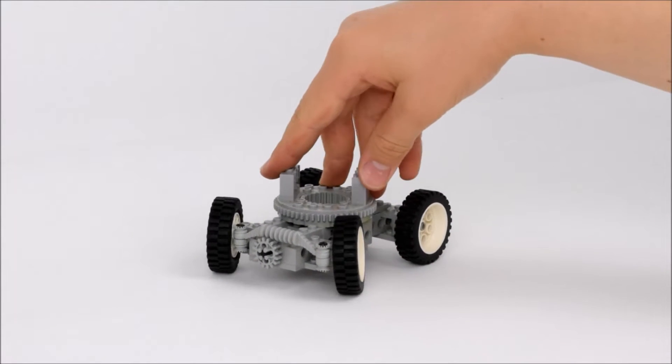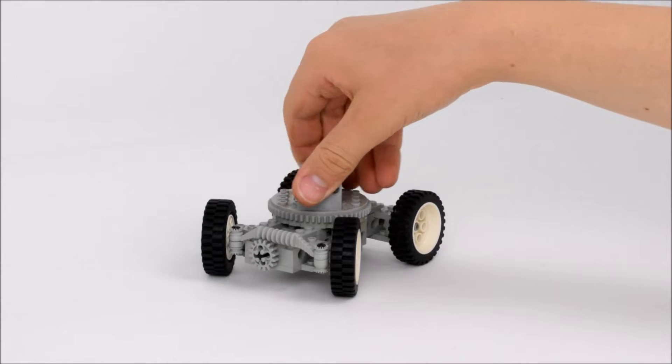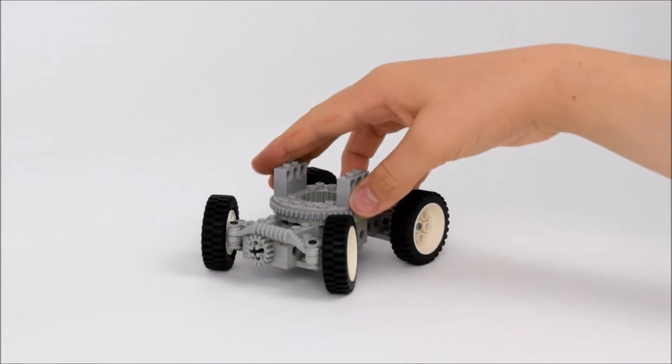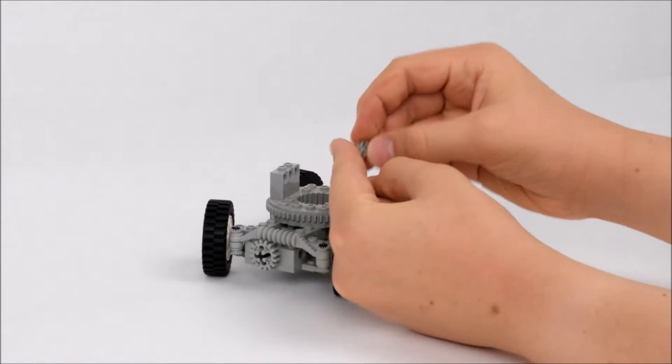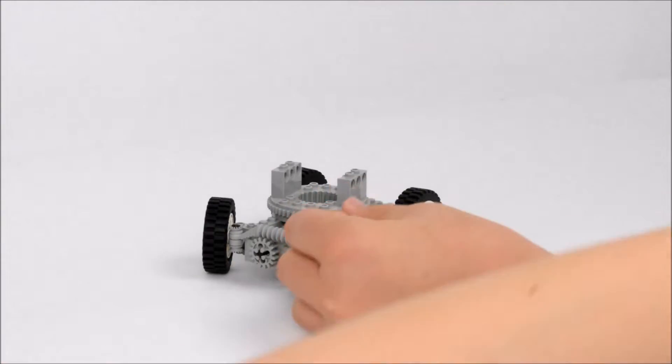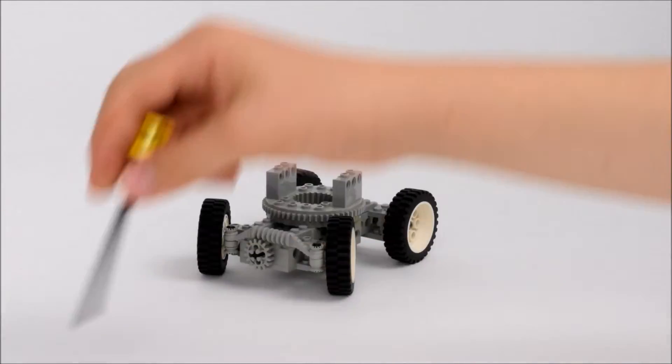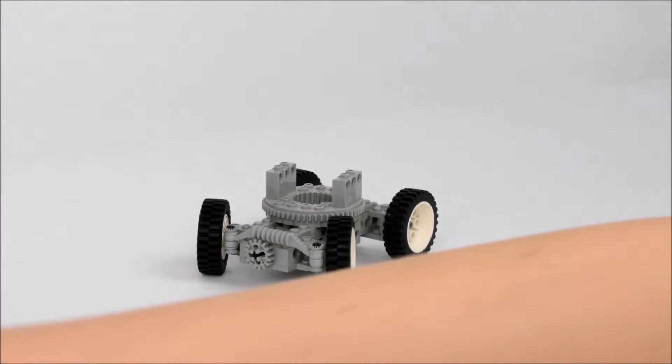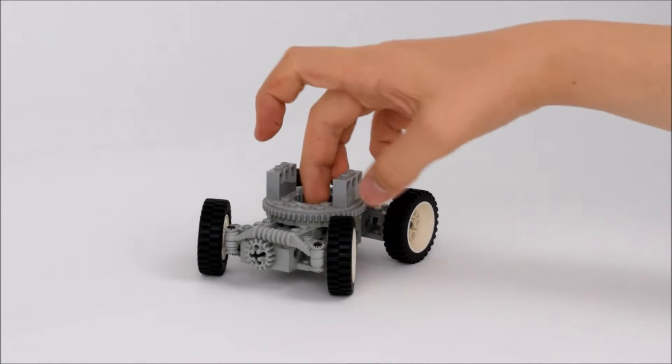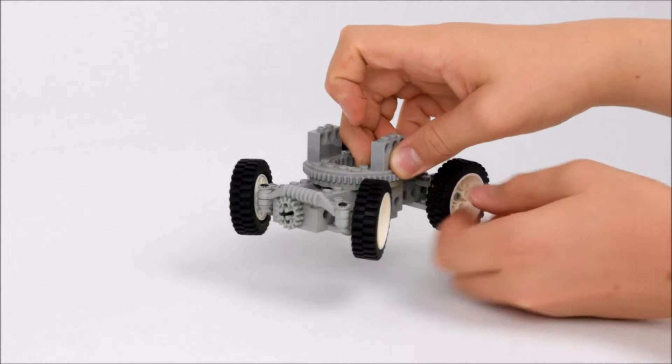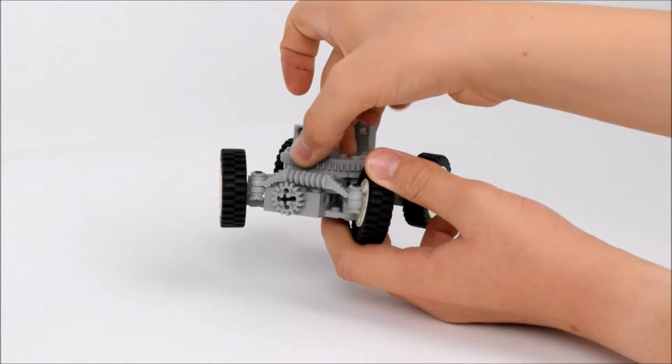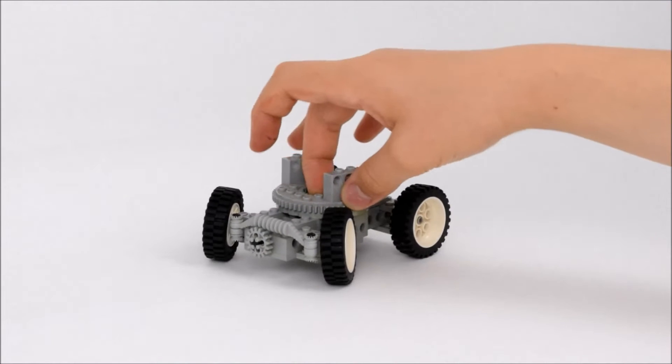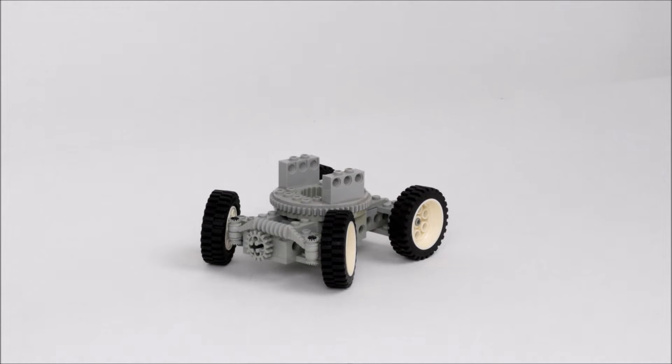And then the way the top spins is with this little turn table. And again, the same gear, except this time it gets pulled up like this, and when you turn it, it turns the inside, which then eventually makes the top turn. So that is the base, and let's keep going.